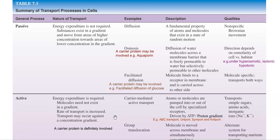The first type is passive transport. Energy expenditure is not required — no ATP or proton gradient is needed for the movement of the substance. Substances exist in a gradient and move from areas of high concentration towards areas of low concentration. An example of passive transport is diffusion, also called passive diffusion. It is a fundamental property of all atoms and molecules that exist in a state of random, non-specific Brownian motion and can move in both directions.